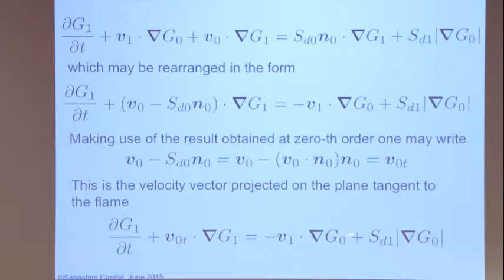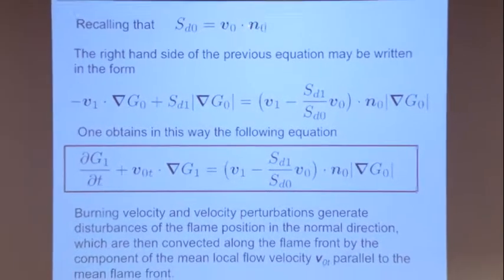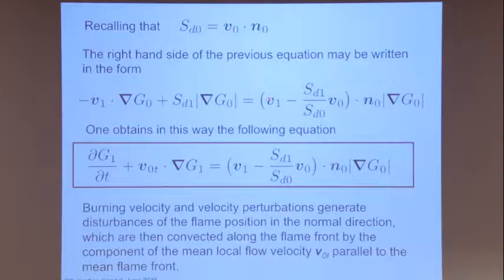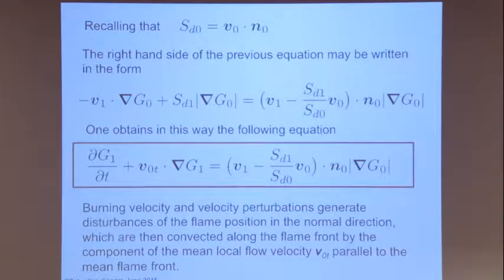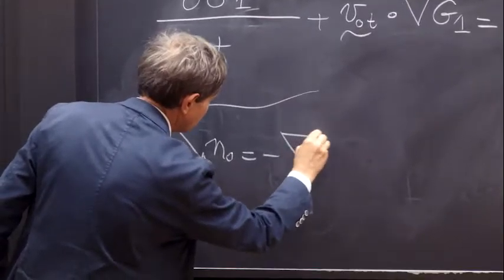There is a slight difference here, but you can actually put these two terms in an even better shape by noting that SD0 is equal to V0 times N0. As a consequence, this term here plus this term can be written as V1 SD1 divided by SD0. The flame is described so you have a mean flame, and the normal to the mean flame N0 is minus gradient of G0.